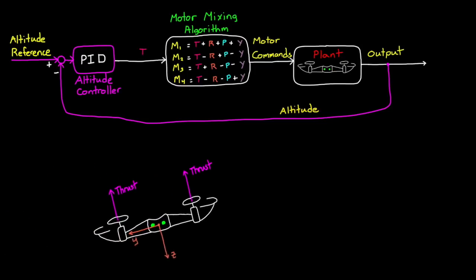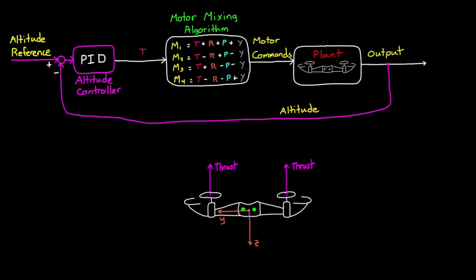Nope, we clearly need a better control system architecture. And we should start by trying to maintain level flight by controlling roll and pitch angles to zero degrees. If we can keep the mini drone level, then thrust once again will only impact altitude, and the drone won't wander away.